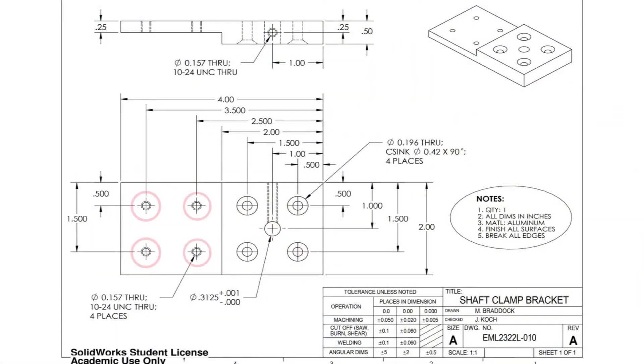This feature indicates 10-24 threaded holes in four places. The 157 through hole is the tap drill size for the 10-24 threads. This center drill hole is 3125 in diameter or more commonly known as 5/16ths. The tight tolerance indicates the use of a reamer.